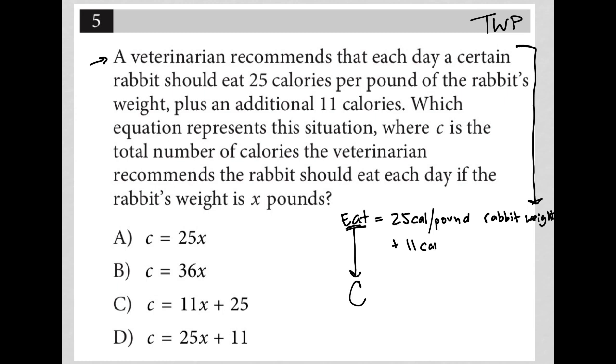So in terms of per pound rabbit weight, that's our first term, so we know that's going to be 25 times x. And then of course we have to add in the additional 11 calories that the information here tells us the rabbit should be eating additionally.